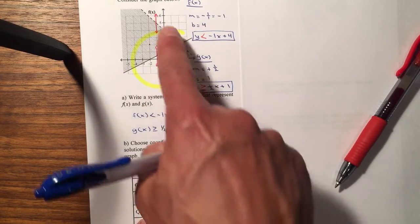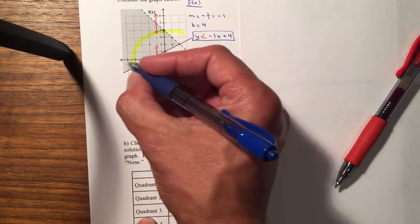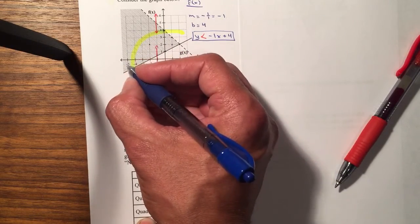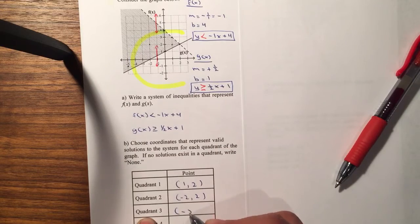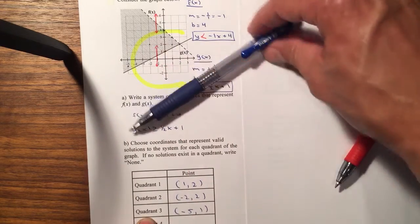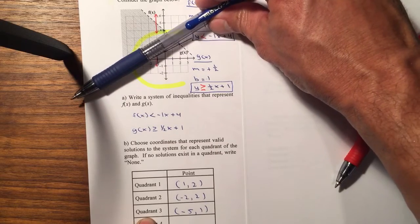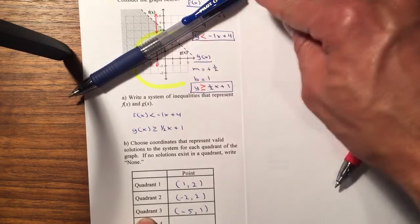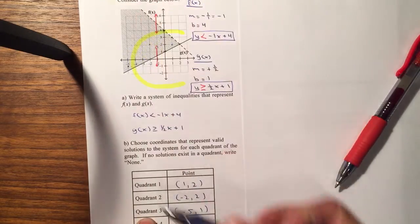Quadrant number 3, we can select this point here, so it will be negative 5 and down 1. And quadrant number 4, notice that quadrant number 4 will never be shaded, even if the lines continue to infinity, there will be none.